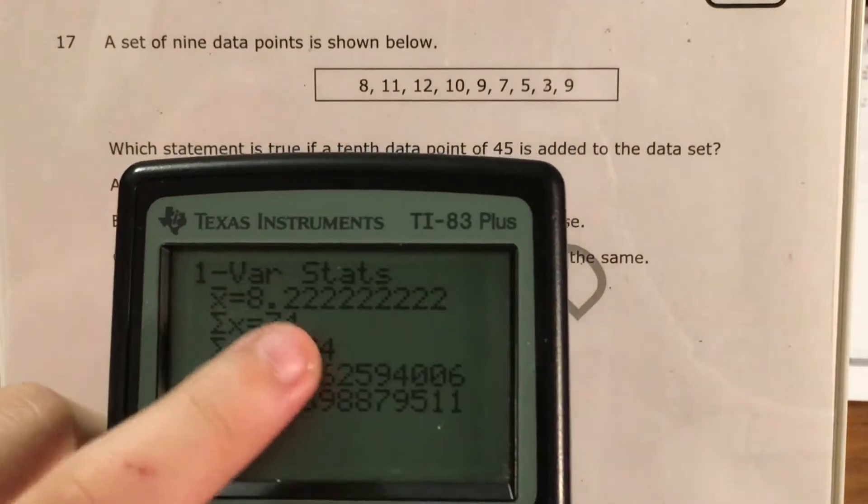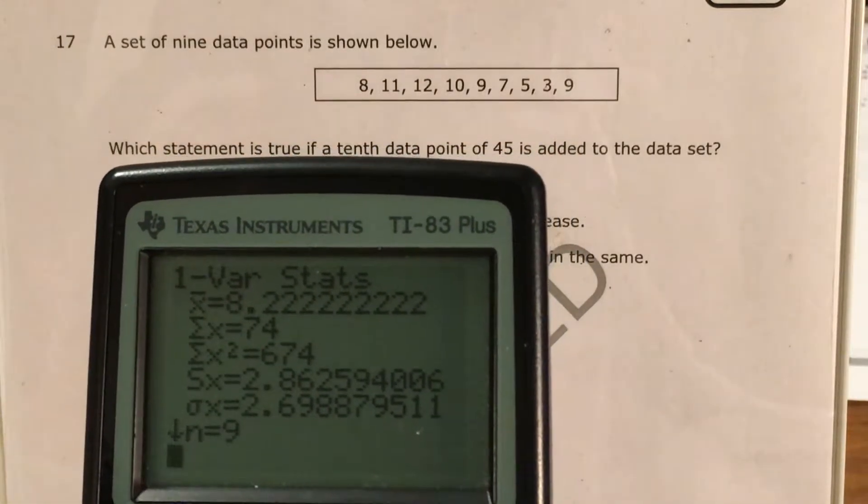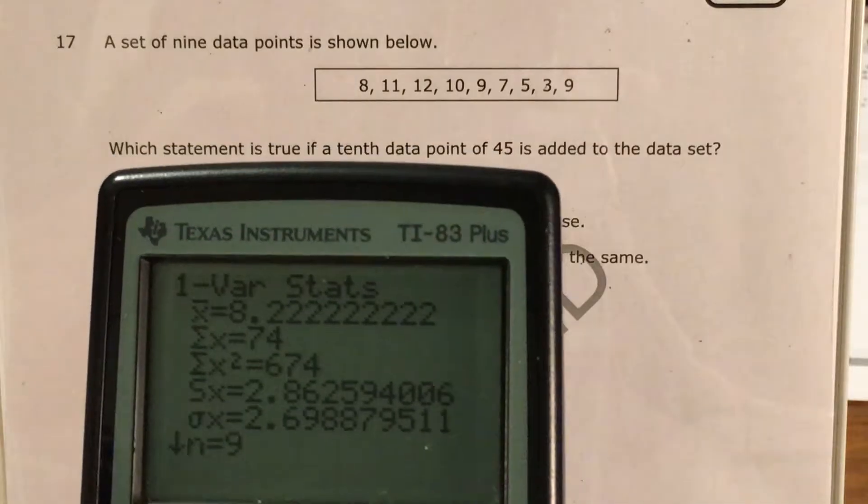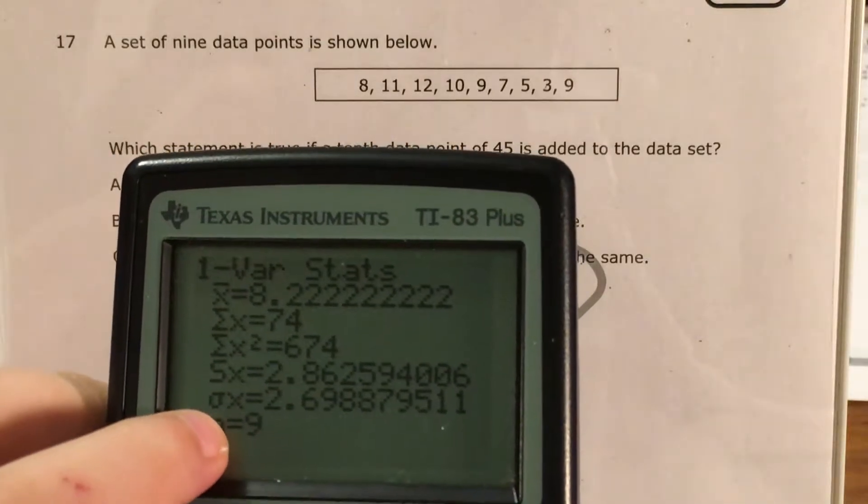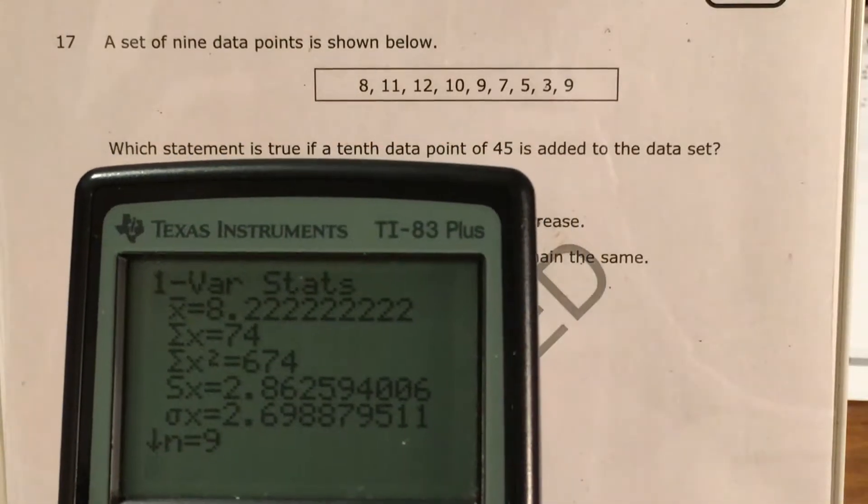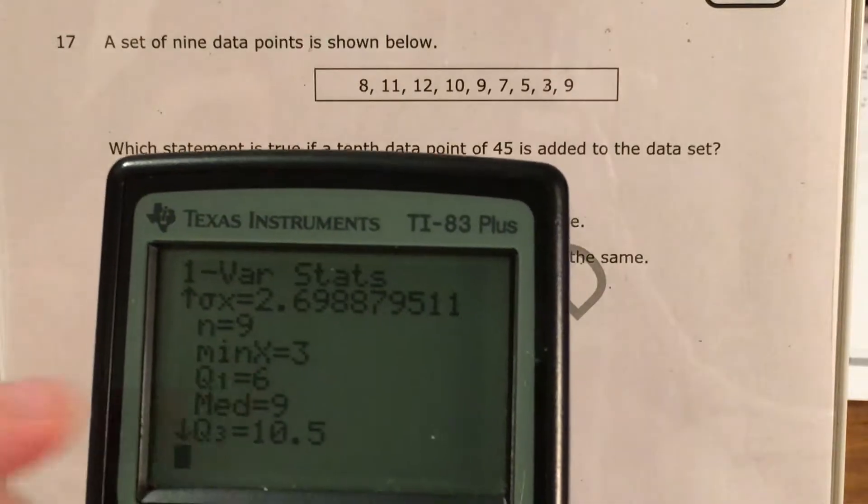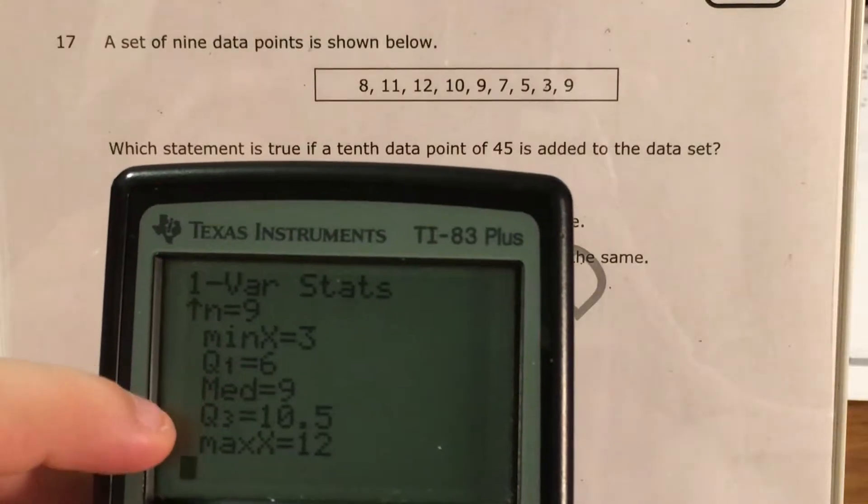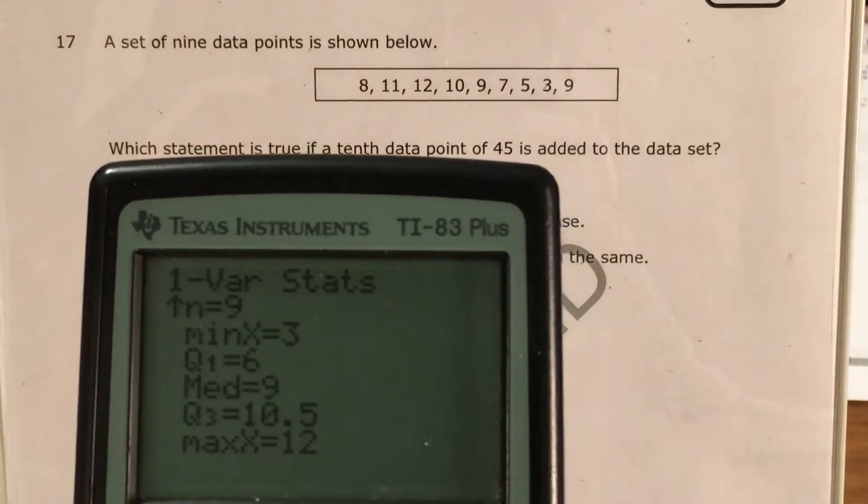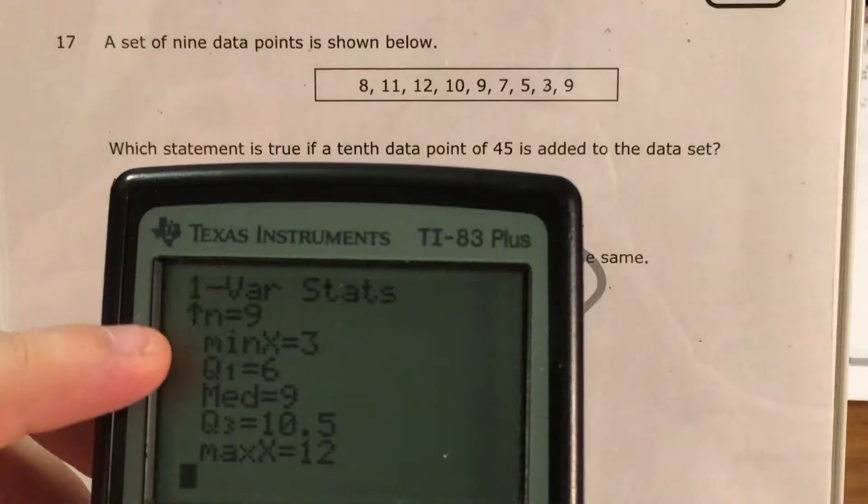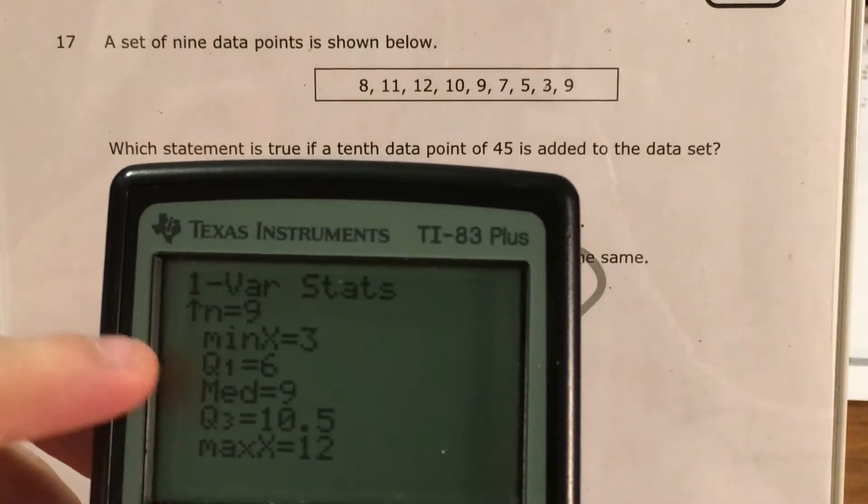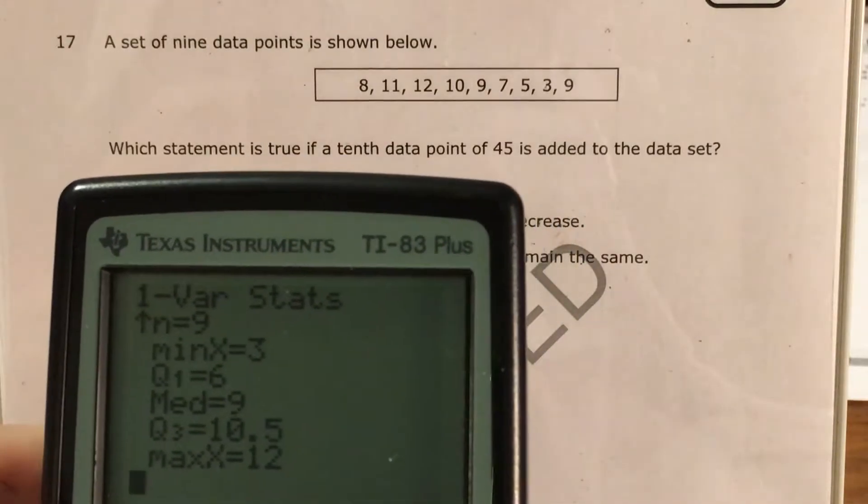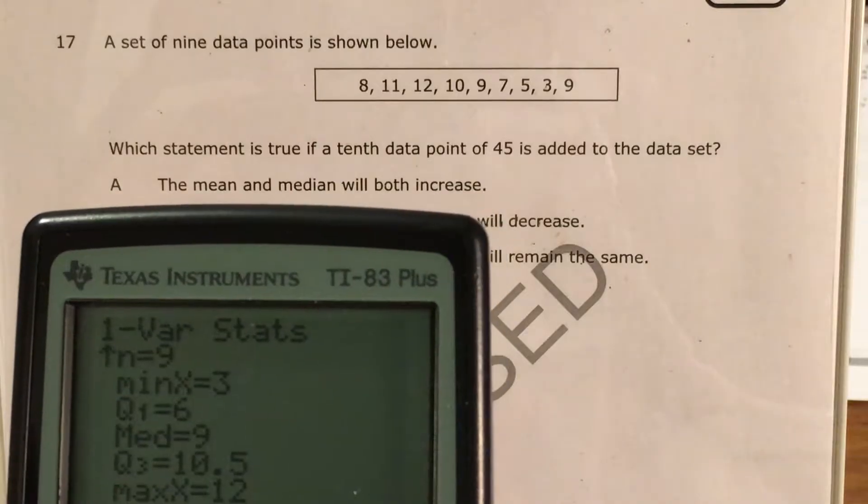This one, X with the bar over it, that's your mean. That's 8.2 repeating. This thing, the sigma down here, that's called your standard deviation. We have N, which is the number of data points. And then this five-number summary that you might remember from 6th or 7th grade when you made box plots. The minimum, lower quartile, median, upper quartile, and the maximum. So let's go ahead and actually record our mean and median because we're going to have to get rid of this data in order to find the mean and median of the other set.